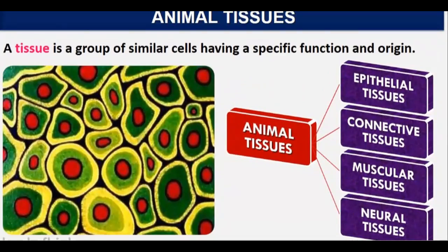A tissue is a group of similar cells, meaning all cells are structurally and functionally similar, and they have a specific function and origin. The four types are: epithelial tissue, connective tissue, muscular tissue, and neural tissue.